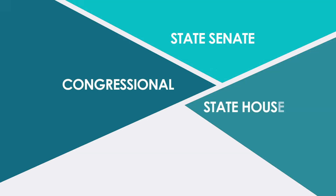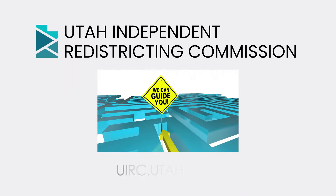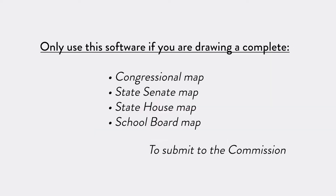This guide gives you a brief overview of how to draw, save, and submit full maps for Utah to the Utah Independent Redistricting Commission. This software should only be used if you are interested in drawing a complete congressional, state senate, state house, or school board map. Only begin drawing maps on this software if you intend to complete a whole map to submit to the commission. If you are interested in just submitting a community of interest or commenting on a specific area, visit uirc.maps.arcgis.com or send us an email at uirccomments@utah.gov.